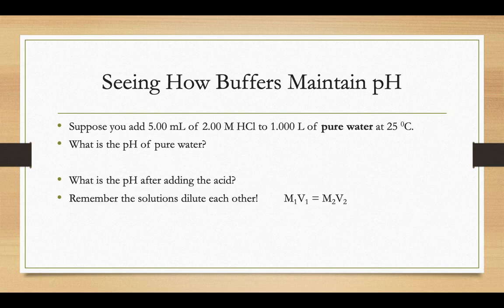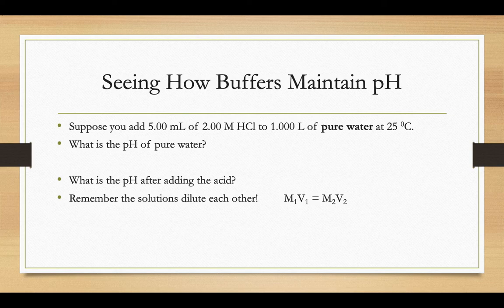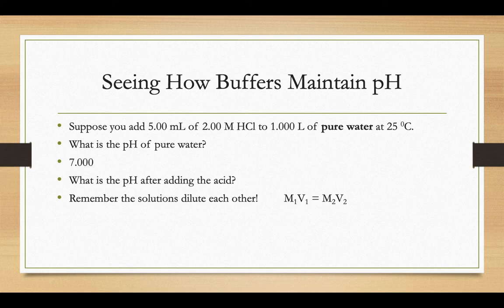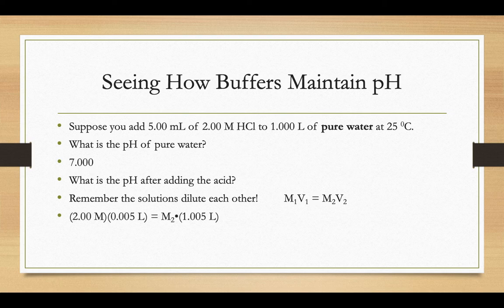So let's see how a buffer maintains the pH of a solution. Let's say we added five milliliters of two molar hydrochloric acid to a liter's worth of pure water at 25 degrees. Well, the pH of pure water is just seven. But after adding the acid, then what? Well, remember that your molarity of your acid is two molar prior to mixing it with that one liter of water.